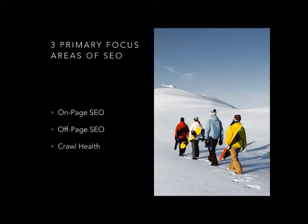Off-page SEO is synonymous with link building, but also includes social media and anything we're doing out on the internet, not on the site itself, to promote our website. Crawl health is the more technical side of SEO — eliminating errors that create problems for Google bots when they crawl a site, such as broken links, duplicate content, misconfigured metadata, and robots.txt file configurations that restrict access to certain parts of your website.